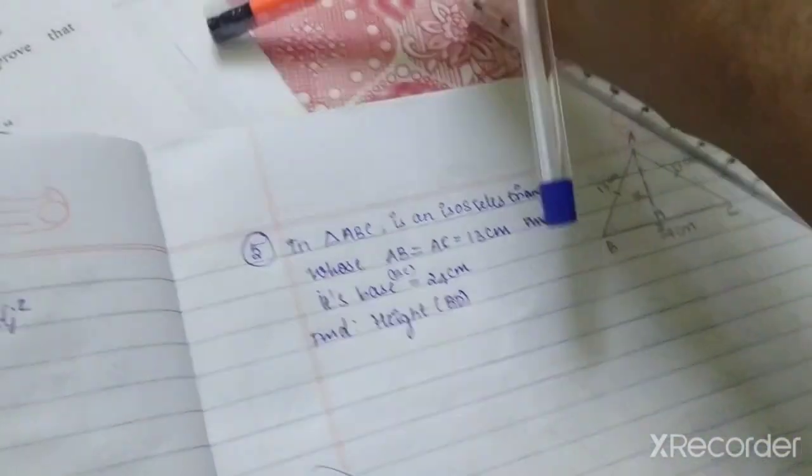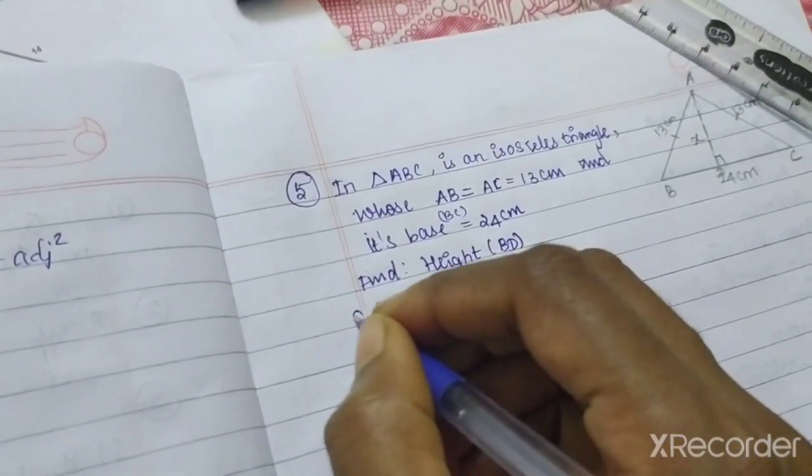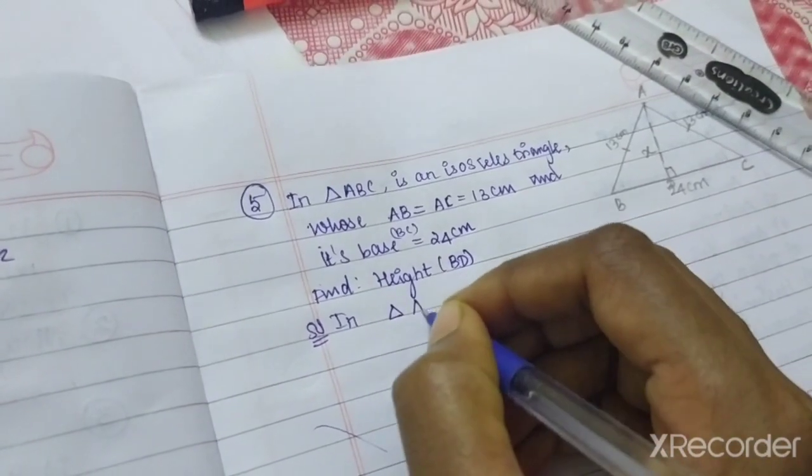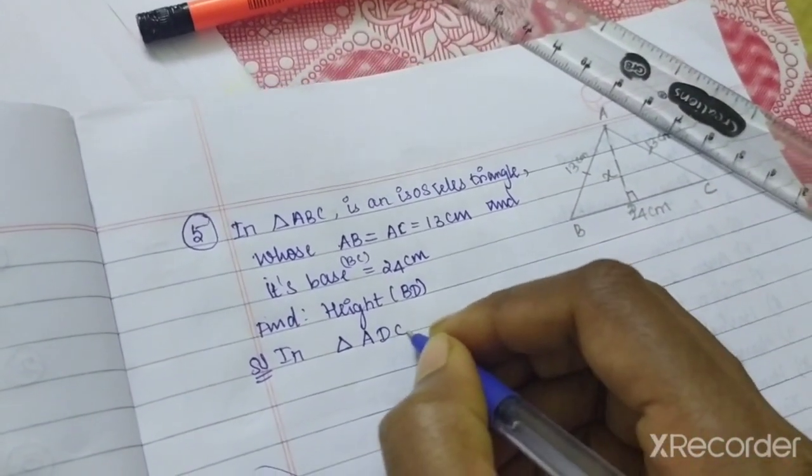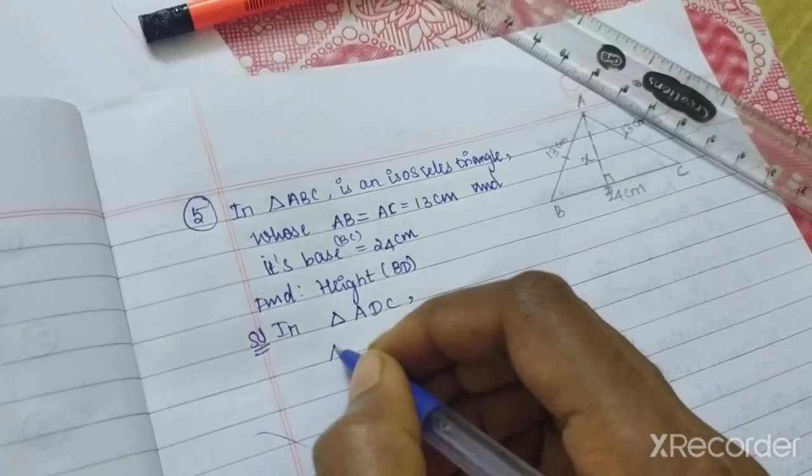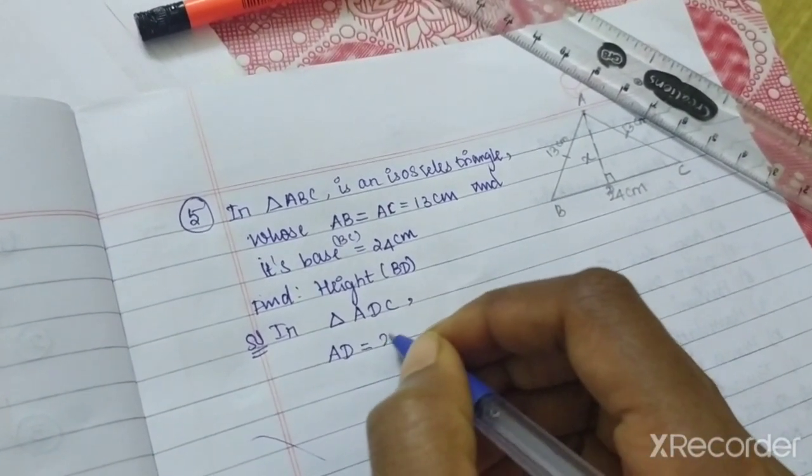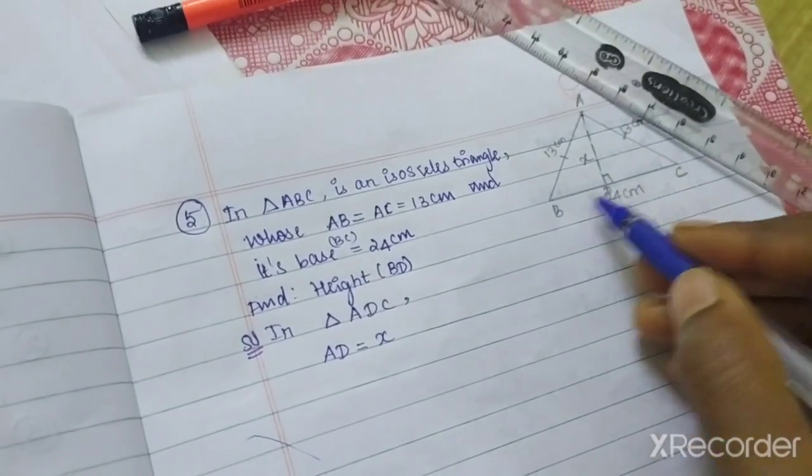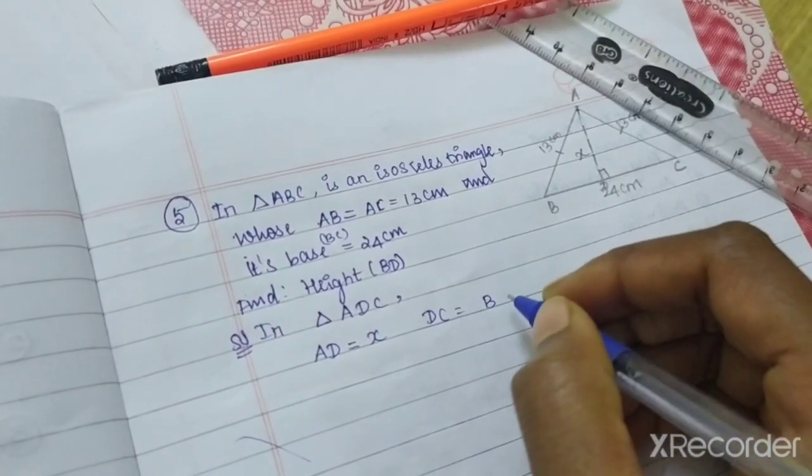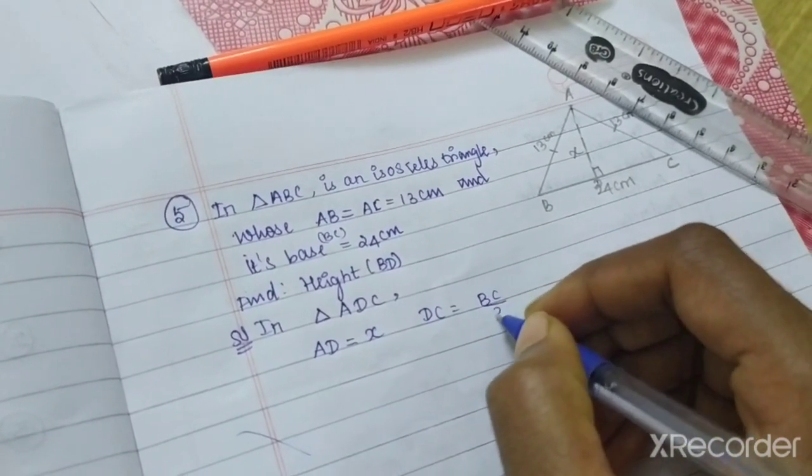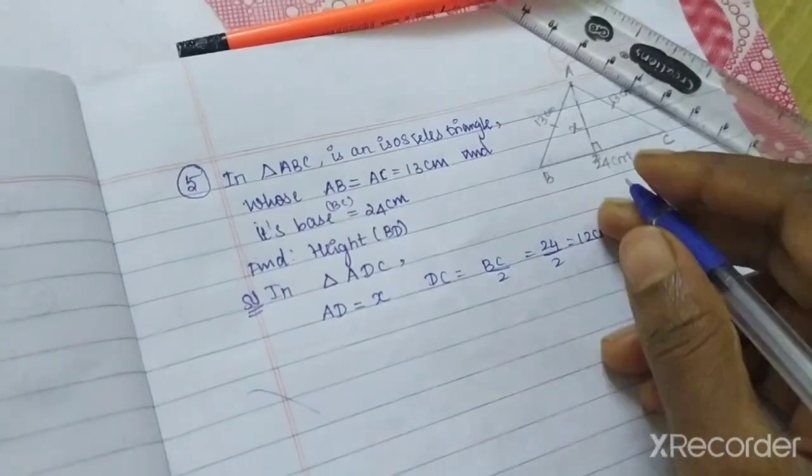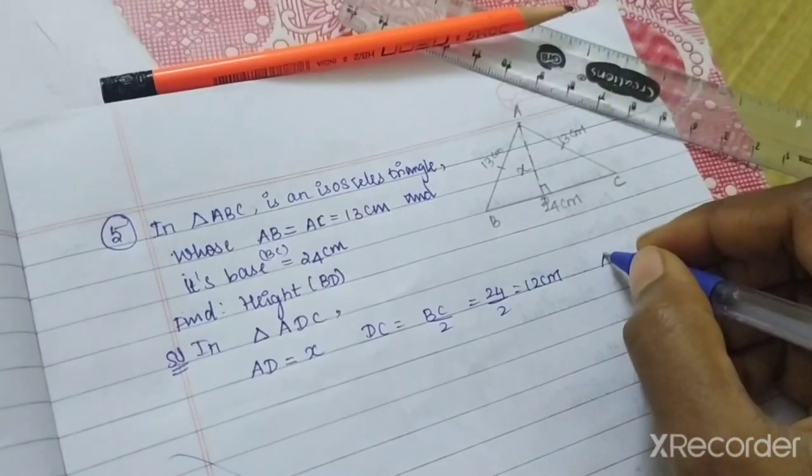In triangle ADC, we are going to find out AD equals X. DC is half of BC, so DC equals BC by 2, so 24 by 2, which is 12 cm.